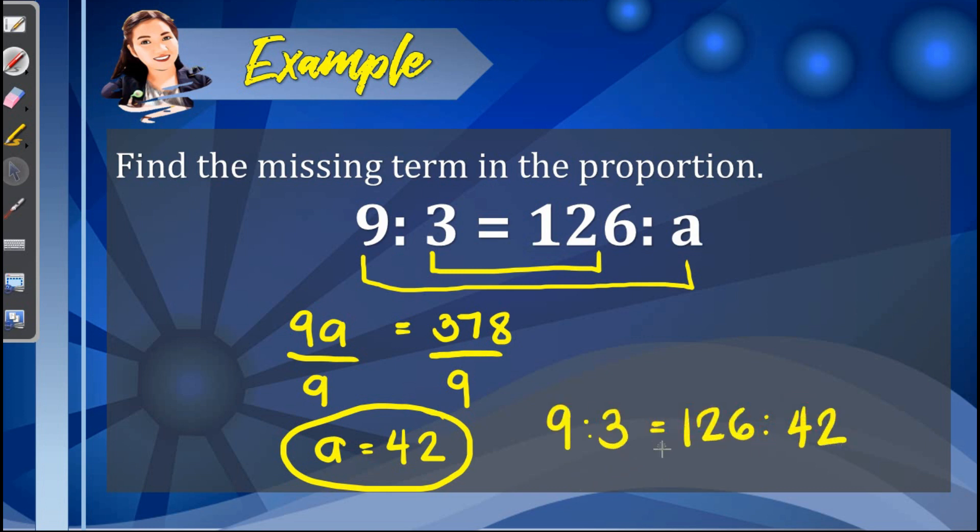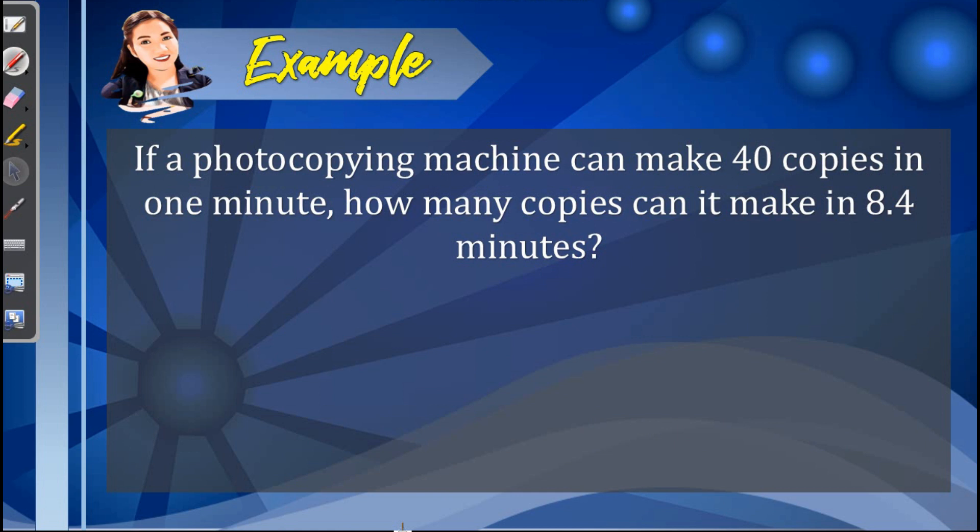So we can now conclude that 9 is to 3 equals 126 is to 42. These two ratios are proportion. Next, if a photocopying machine can make 40 copies in 1 minute, how many copies can it make in 8.4 minutes? So here we have 40 copies to 1 minute.